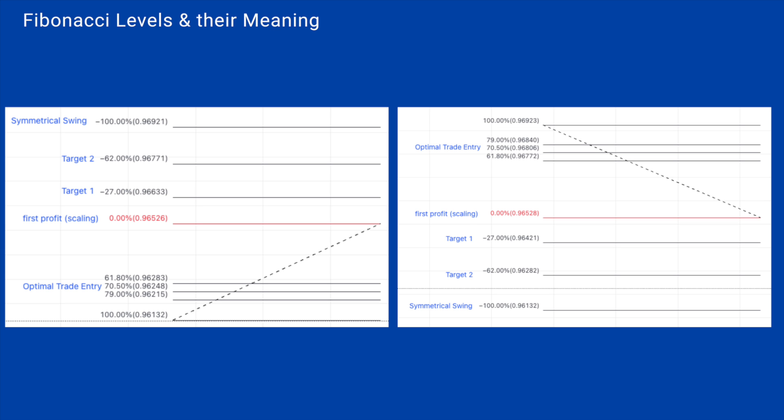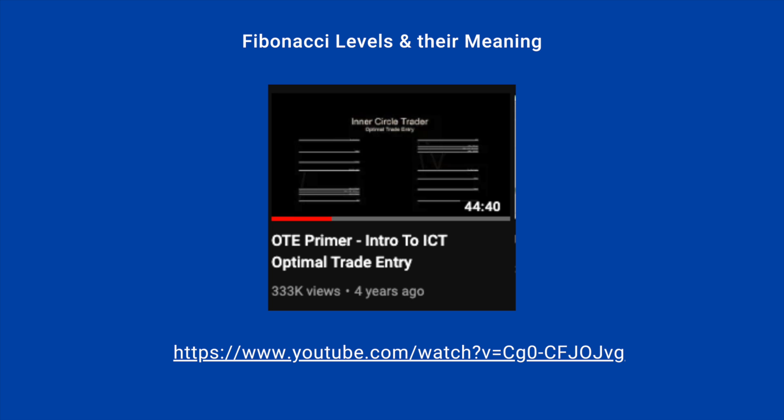For the ICT Fibonacci Retracement, different levels have different meanings. For example, the minus 27% is Target 1 and minus 62% is Target 2. The Optimal Trade Entry is at 70.50% and the zero level is the first profit or scaling point. To see more about these settings and what they actually mean, you can either use the PDF linked below or the ICT original video that I'm linking here, where I'm showing you a screenshot of how it actually looks.